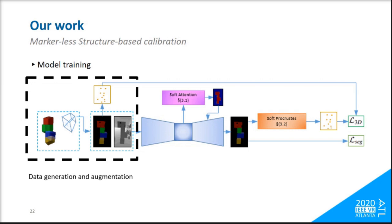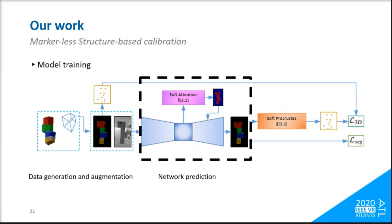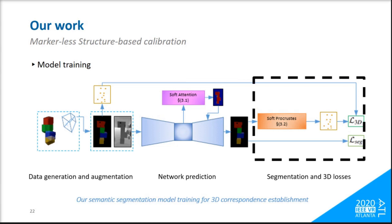These are complemented by ground-truth segmentation labels which are used to train our deep convolutional network. We supervise our model with a cross-entropy loss and a soft Procrustes analysis that enables a differentiable regression loss on the correspondences through the predicted segmentation map.